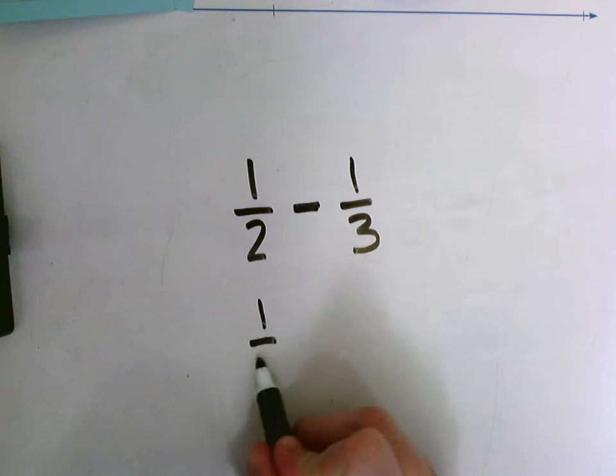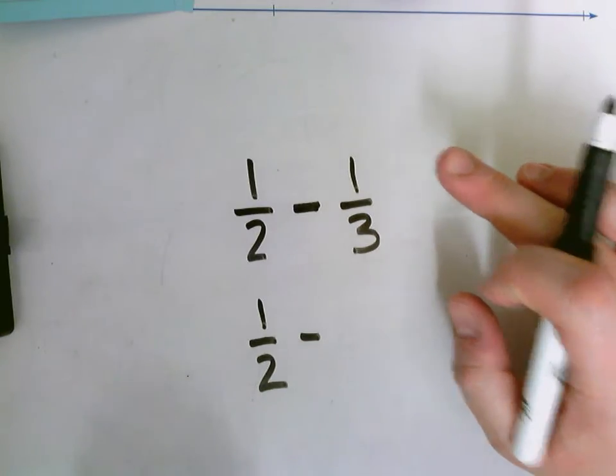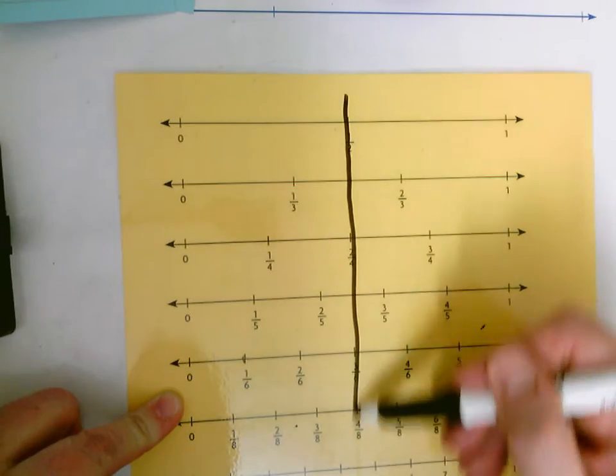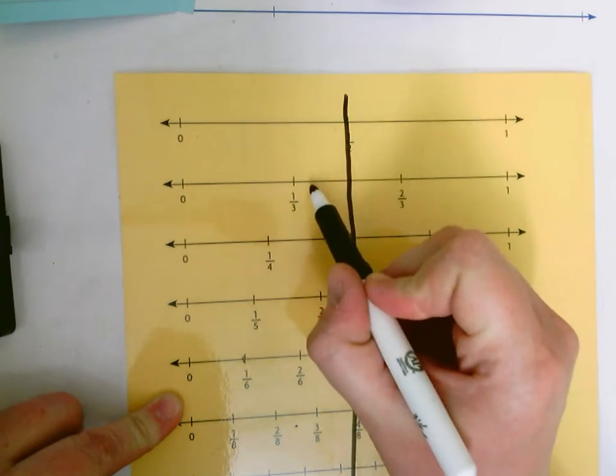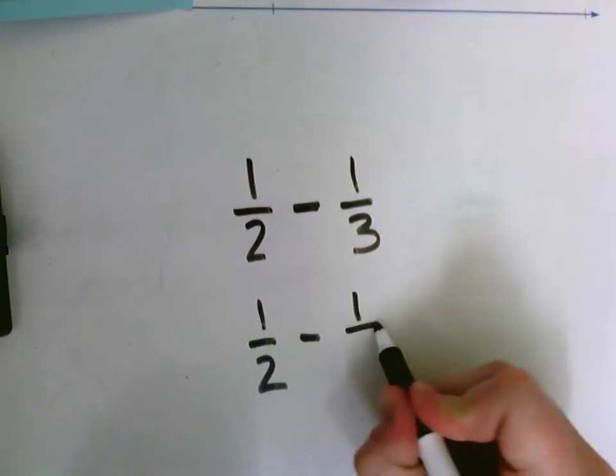So I'm going to keep it at a half. Now I'm going to think about one third. Is one third closer to one half or closer to zero? So here's my half line. One third is closer to one half than it is to zero, so we're going to round that one third to a half.